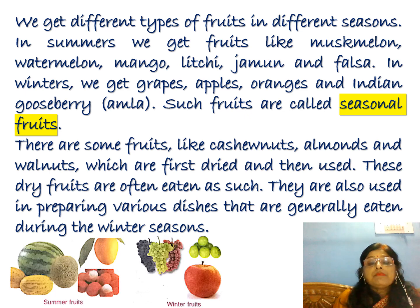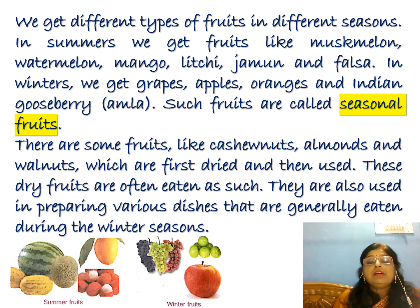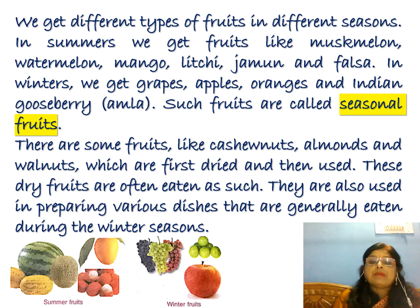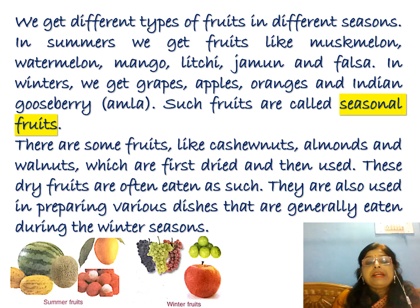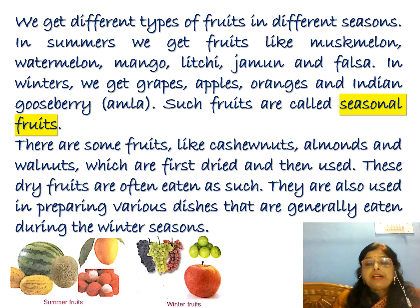Fruits are found in different seasons. In summer we get muskmelon, watermelon, mango, and lychee — we enjoy the taste of such fruits in summer season. Some fruits are of the winter season: we get grapes, apples, oranges, and Indian gooseberry, also called amla. So different types of fruits are found in different seasons.